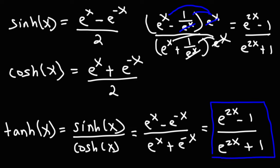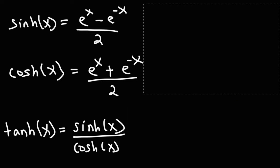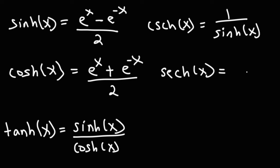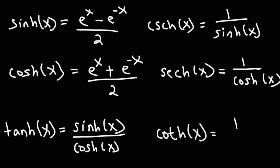Those are the different forms in which you can represent hyperbolic tangent. Now let's talk about the reciprocal functions. Hyperbolic cosecant is simply 1 over hyperbolic sine, very similar to how cosecant is 1 over sine. Hyperbolic secant is 1 over hyperbolic cosine, and hyperbolic cotangent is 1 over hyperbolic tangent. Those are the basic formulas you want to know when it comes to hyperbolic trig functions.